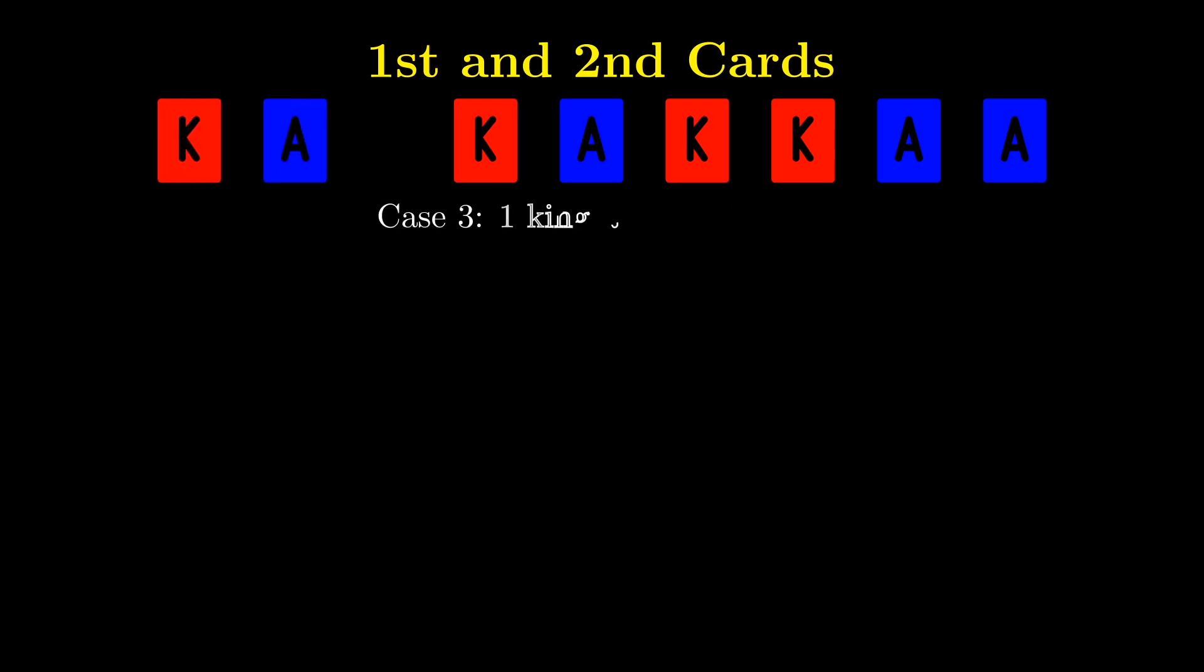For case 3, we have 1 king and then 1 ace. This is actually just the same as case 2, so the total number of arrangements is also 20.